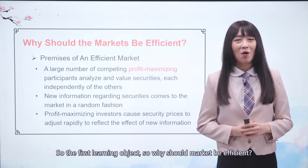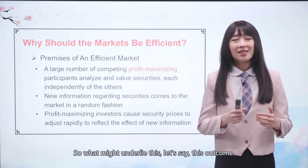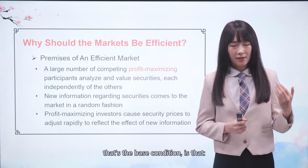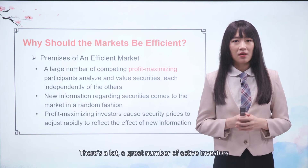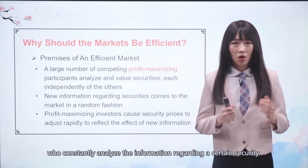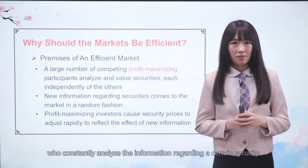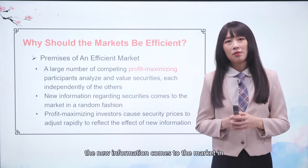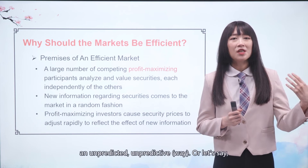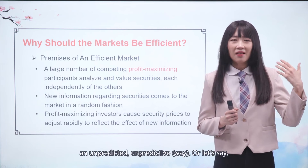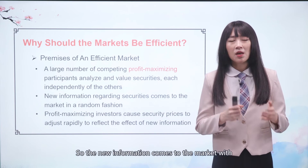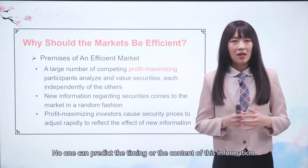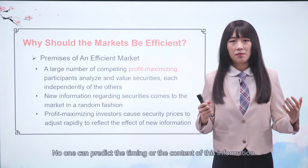So the first learning objective: why should the market be efficient? The first condition — the base condition — is that there are a great number of active investors who constantly analyze the information regarding a certain security, and they make their investment decisions independent of each other. Second, new information comes to the market in an unpredictable fashion — things that cannot be foreseen — so no one can predict the timing or the content of this information.